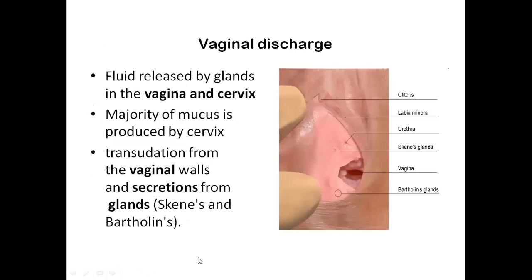So what is basically a vaginal discharge? It is essentially a fluid that is released by glands in the vagina and cervix. A majority of it comes from the cervix. From the vaginal wall, the components responsible for releasing this discharge are two glands — the Skene's gland and the Bartholin's gland.